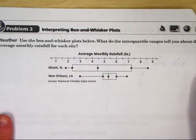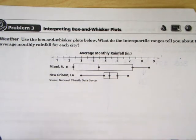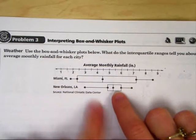Problem number three is talking about interpreting box-and-whiskers. And this is more or less what you're going to see on the keystones. So this is where it becomes very important for you to focus on the words and terminologies. Use the box-and-whisker plot shown below. What do the interquartile ranges tell you about the average monthly rainfall for each city? So we have Miami and New Orleans.